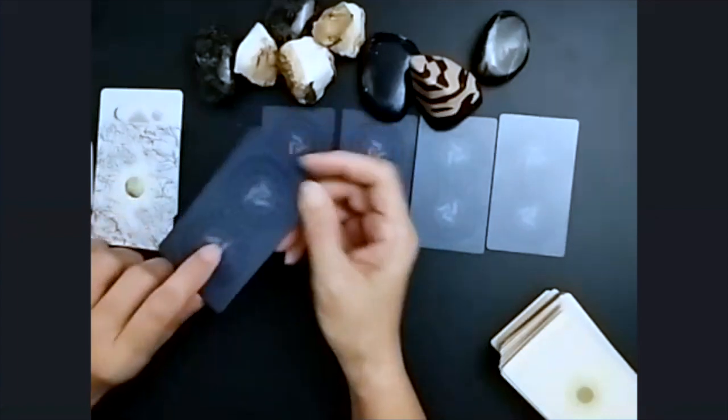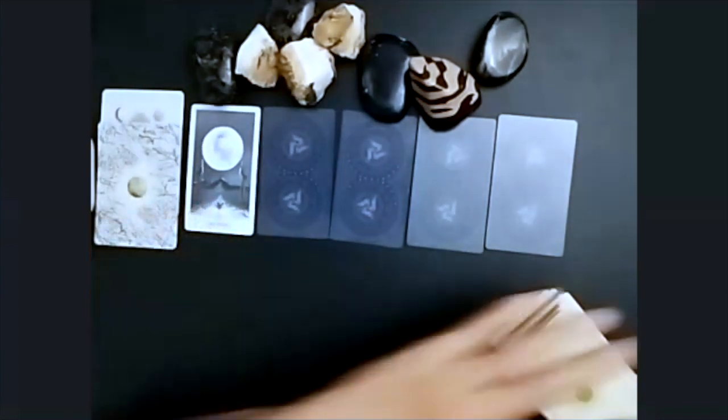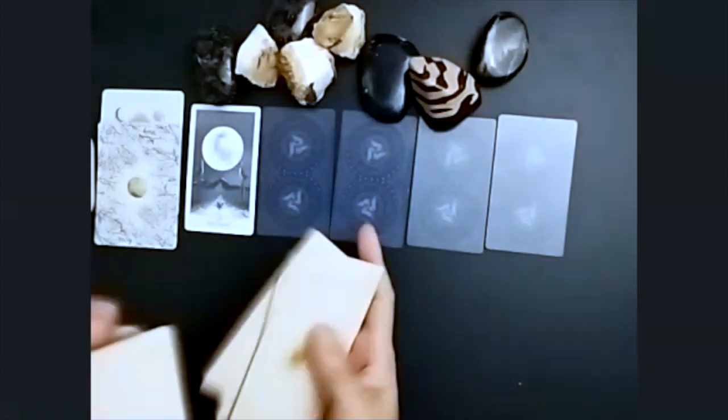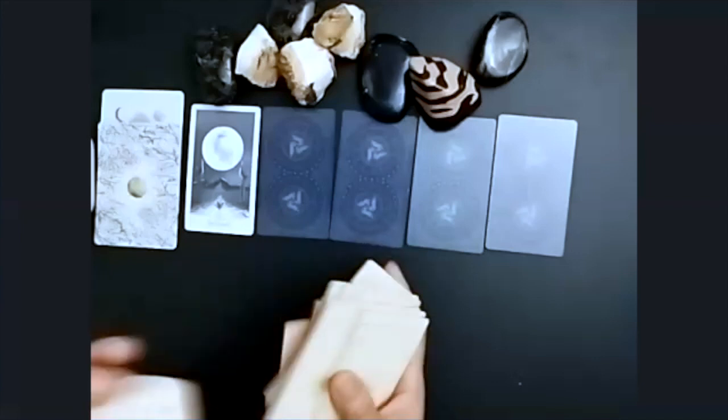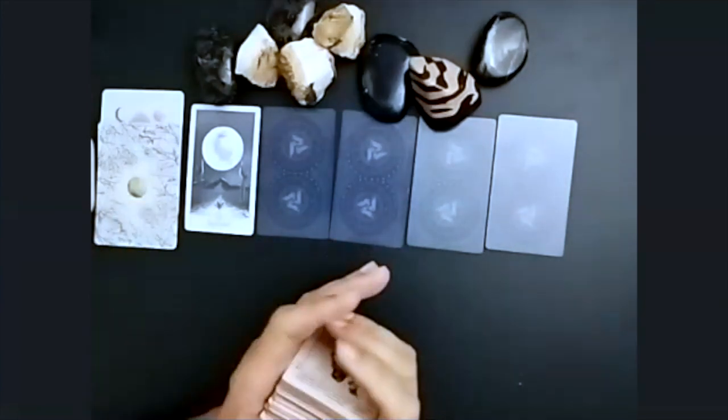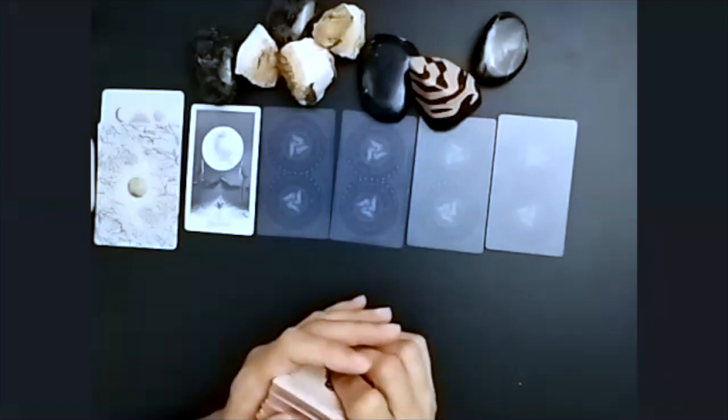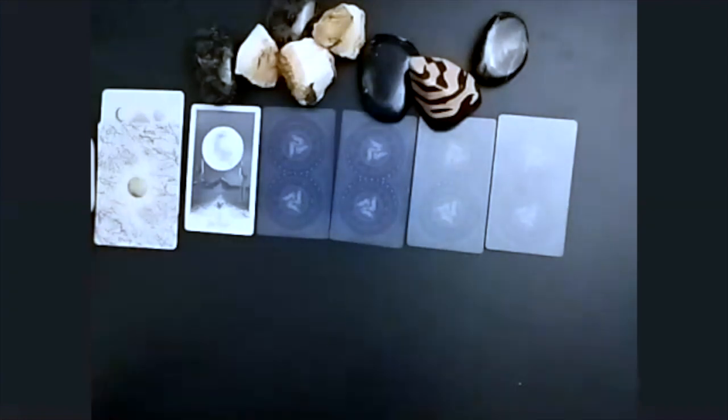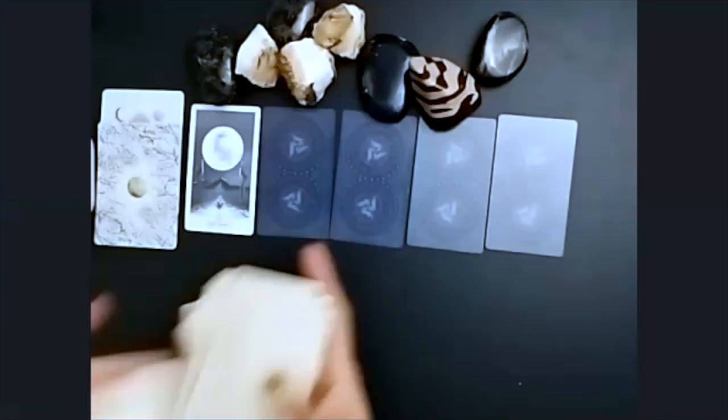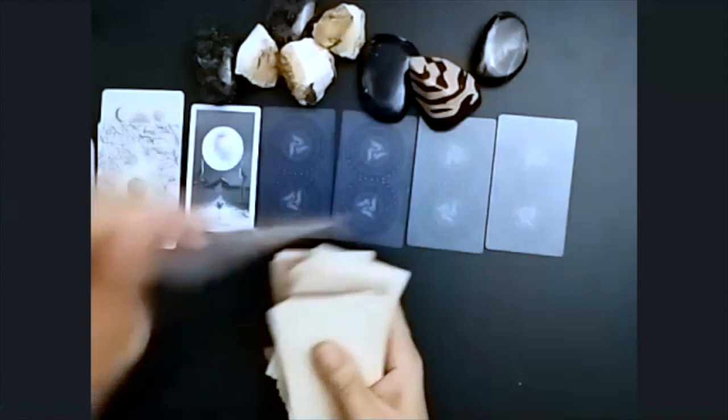First card represents the energies of the Full Moon for you. And we have the Moon, clarified by the Moon. How interesting. So what's going to happen is the Full Moon is going to shine light into some of your deep, dark places, places that maybe have been unknown to you for a long time. The unknown. There is some form of illumination, some form of brightness shining into darker parts or unknown parts.